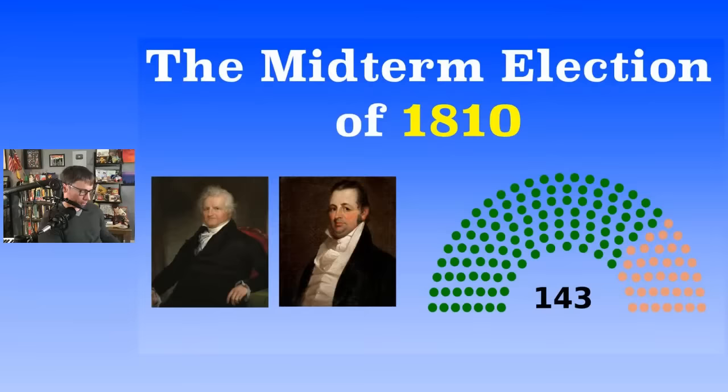On the right, you have John Pope, who took over during the election as president pro tempore. On the left, you have Joseph Bradley Varnum, who was the Speaker of the House in 1810.